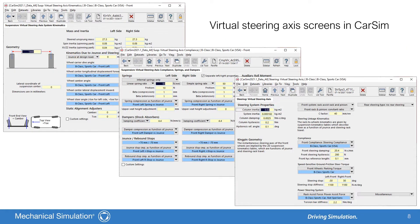The virtual steering axis module is used with three main screens: Suspension Virtual Steering Axis System Kinematics, Suspension Virtual Steering Axis Compliance Springs and Dampers, and Steering Virtual Steering Axis. Additional new libraries are also available to input the 2D suspension kinematics tables.